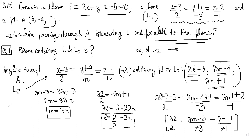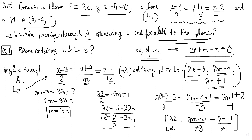The third condition comes from the fact that line L2 is parallel to the plane. The normal to the plane will be perpendicular to the line. Therefore, if L, M, N are the direction ratios of L2, then (L, M, N) · (2, 1, −1) = 0. So we get 2L + M − N = 0 as the third condition.